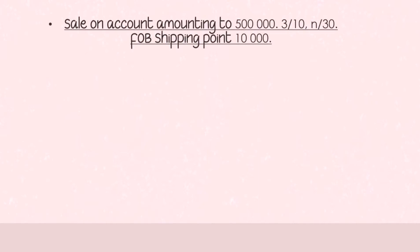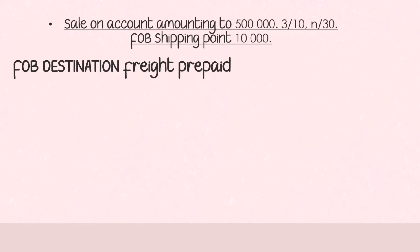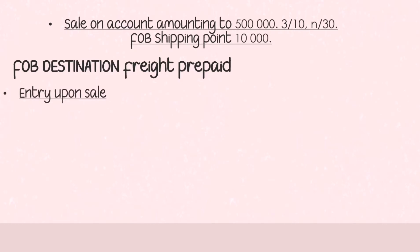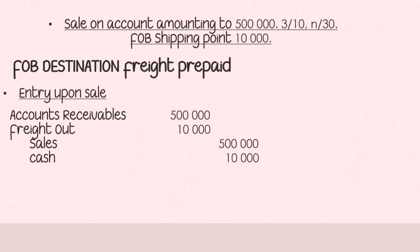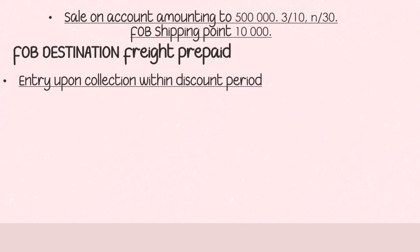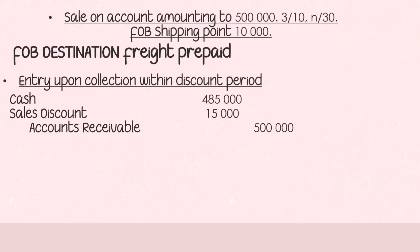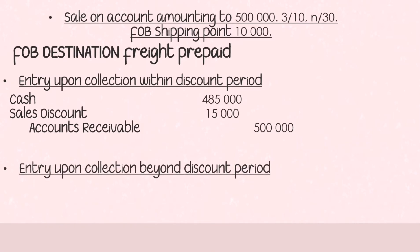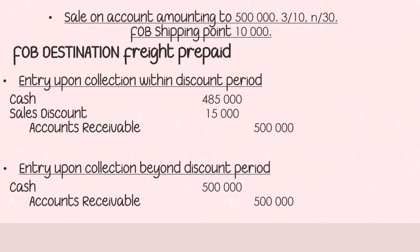We're done with FOB shipping point. Now for FOB destination. Under FOB destination, the seller is liable to pay for the freight cost. With freight prepaid, the seller also initially pays. Entry upon sale: debit accounts receivable 500,000 and debit freight out 10,000 — because it is FOB destination. Credit sales 500,000 and credit cash 10,000 since freight prepaid means the seller pays immediately. Entry upon collection within the discount period: debit cash 485,000, debit sales discount 15,000 (500,000 × 3%), credit accounts receivable 500,000. Entry upon collection beyond the discount period: debit cash 500,000, credit accounts receivable 500,000.